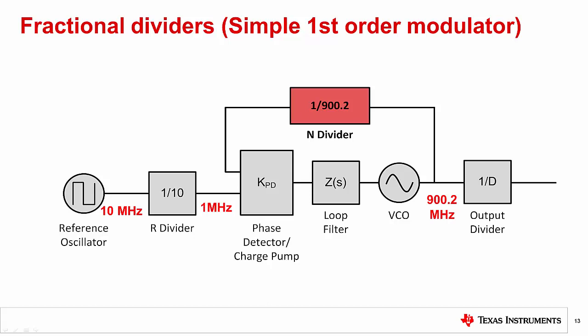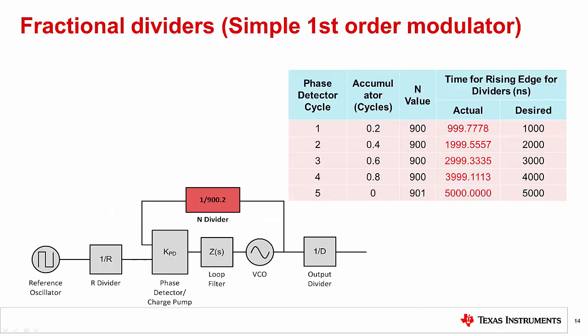Now consider the fractional N divider. In this case, we want to generate a frequency of 900.2 MHz using a 1 MHz phase detector frequency. This fractional divide of 900 and 1 fifth is needed. In order to do this, we modulate the N divider between values of 900 and 901. In this case, we use the divided value of 900 four times and the value of 901 once. The error between the actual and desired rising edges of the phase detector lead to fractional spurs, and they occur at multiples of 200 kilohertz in this case.